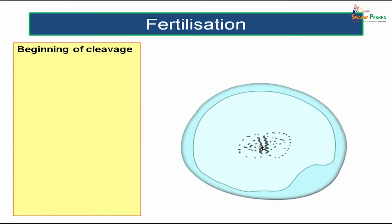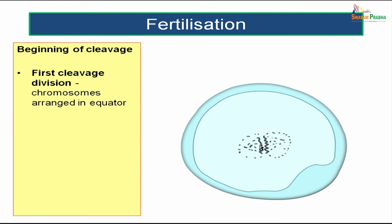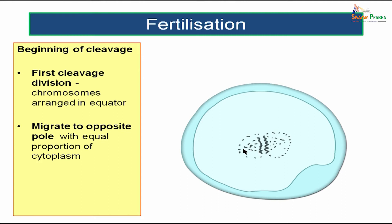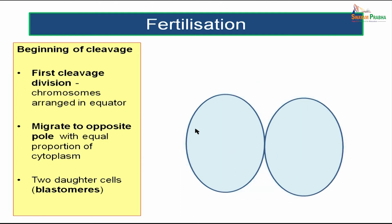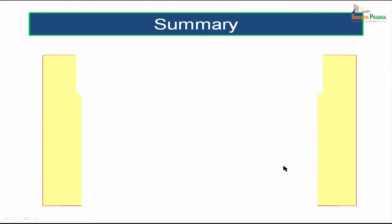Now it is time for the cleavage division. In the first cleavage division, the chromosomes will be arranged in the equator, then the chromosomes will be migrating to the poles with equal proportion of the cytoplasm. The chromosomes will first arrange in the middle, then be pulled towards the periphery with an equal contribution of cytoplasm to each cell. The two daughter cells thus formed are known as blastomeres — the product of cell division — and they have equal amounts of cytoplasm.